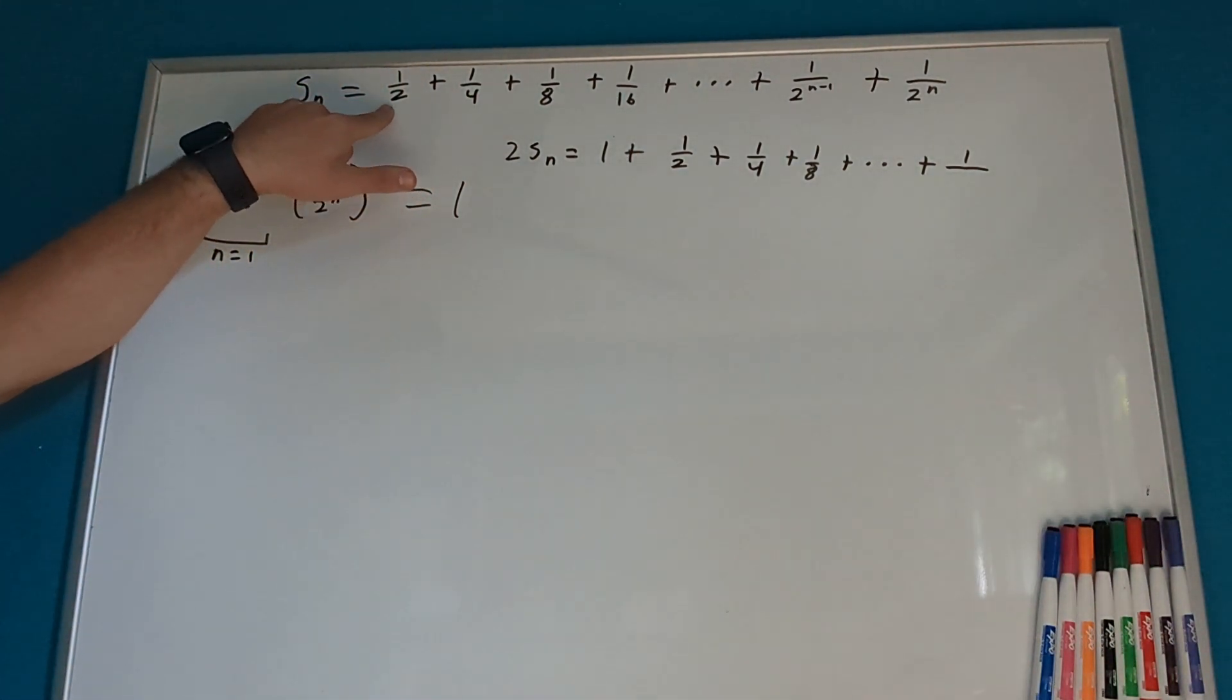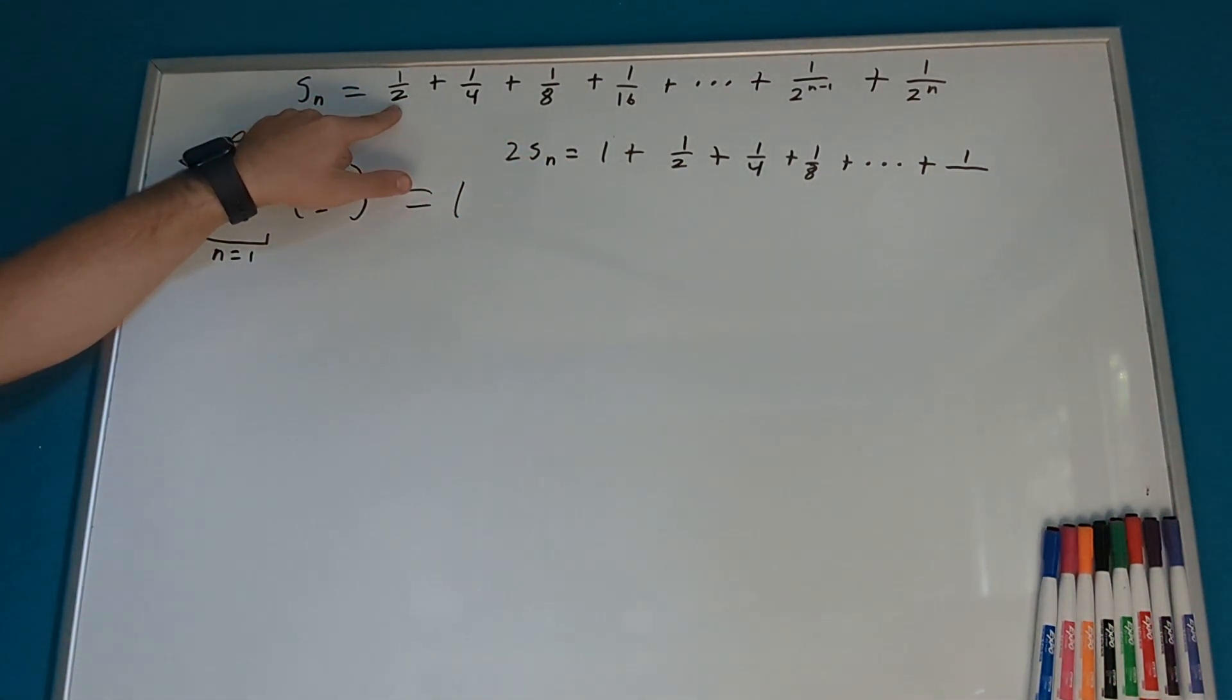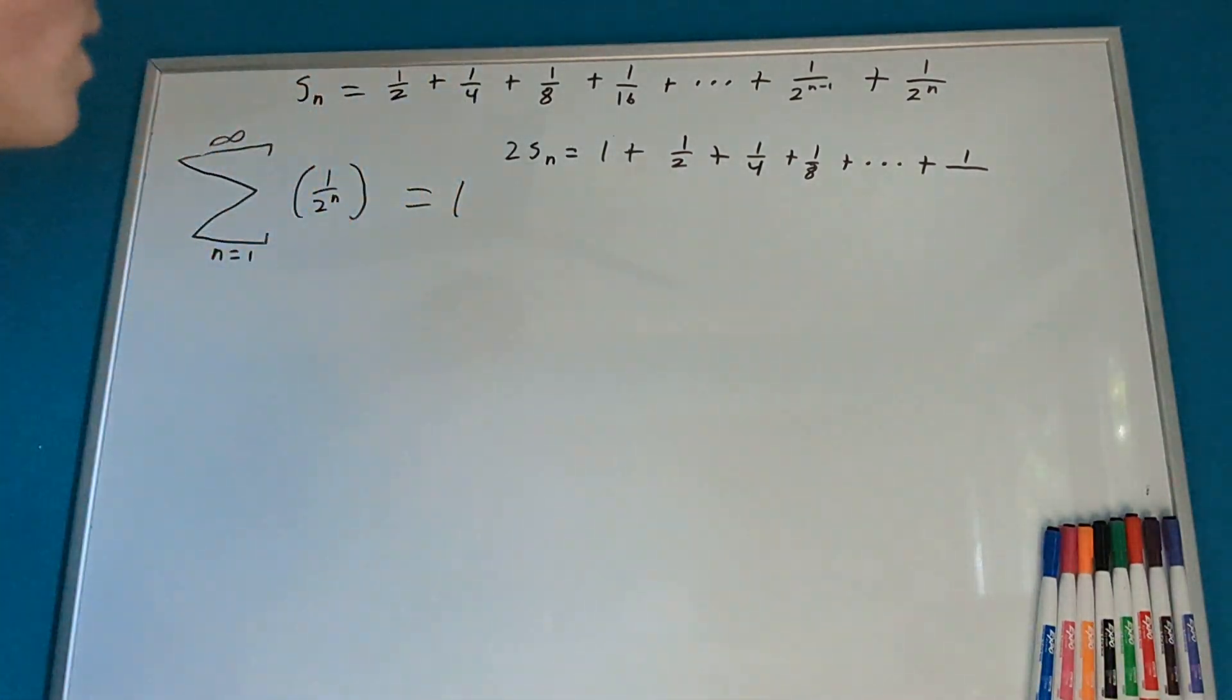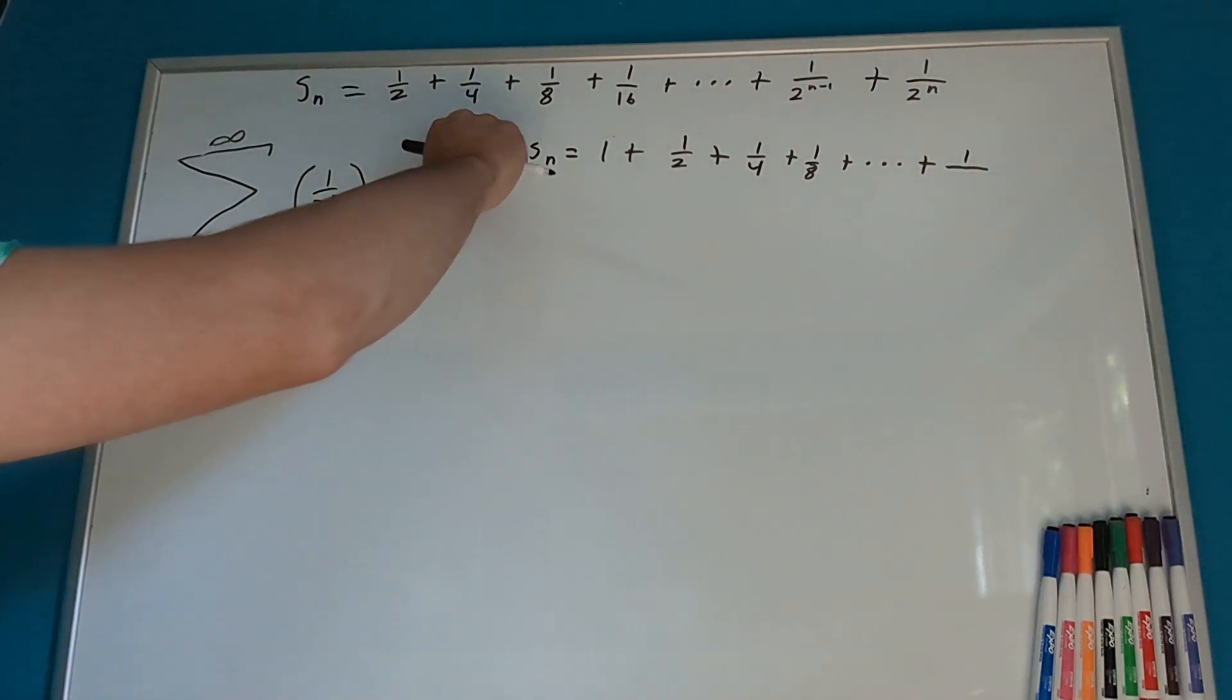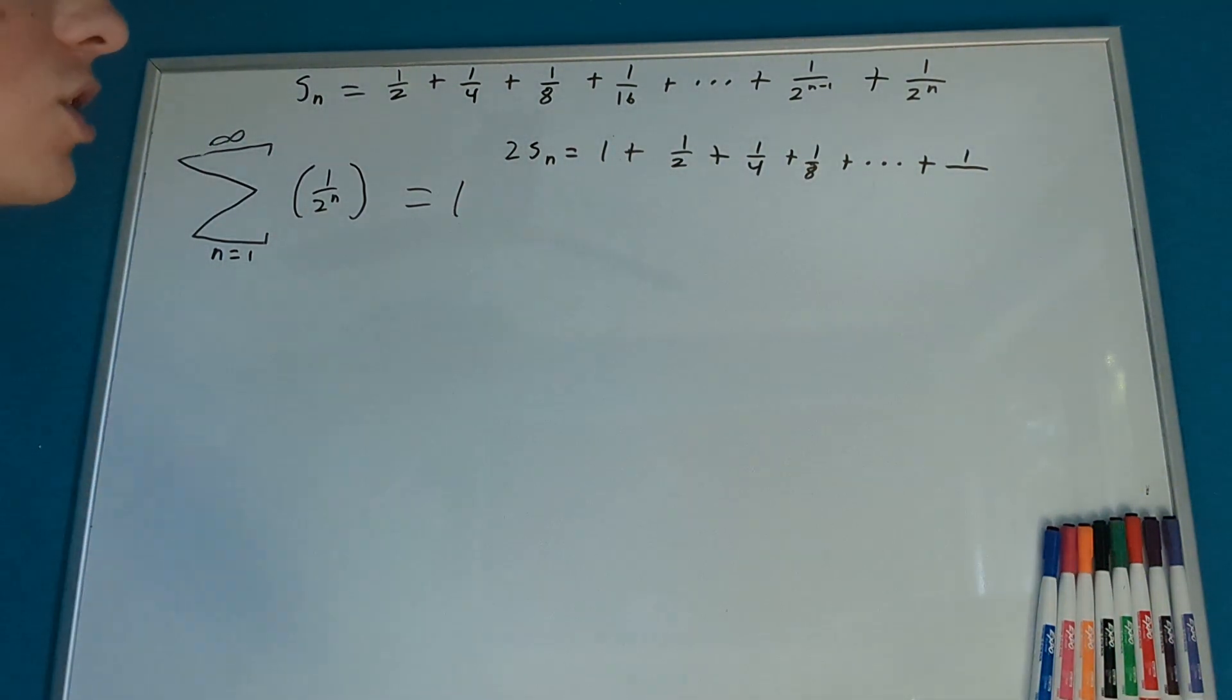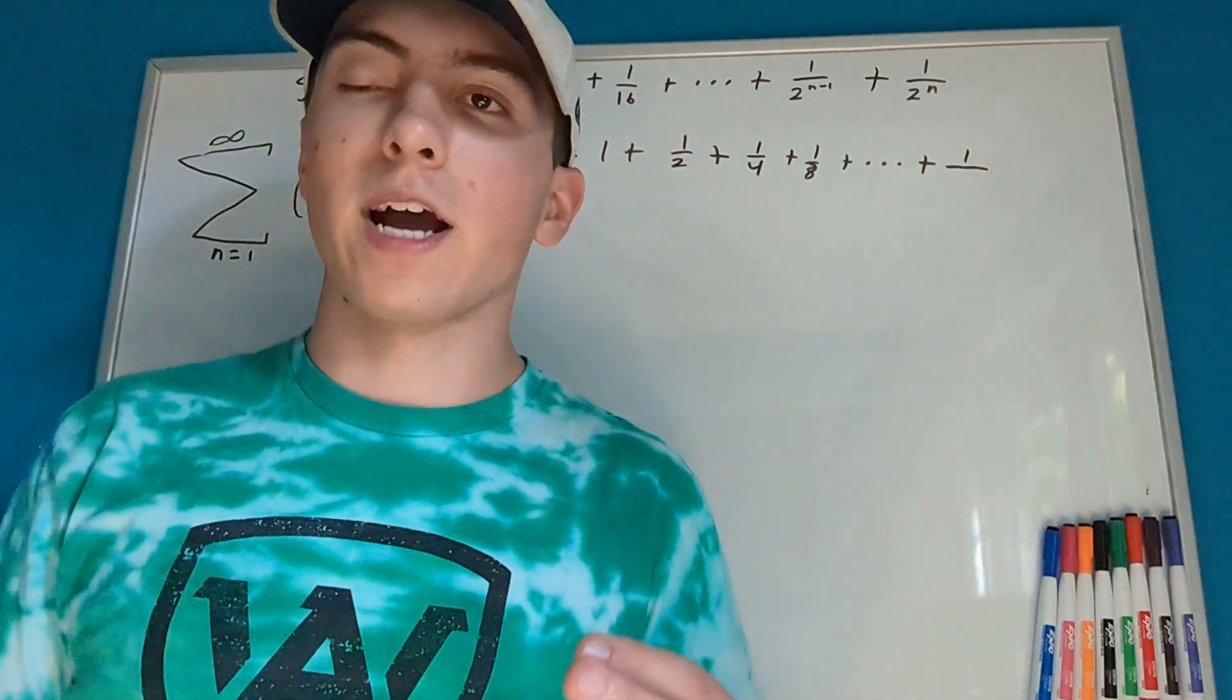Well, if we have 1 over 2 to the 1, like we would have had here, we get 1/2. But if we have 1 over 2 to the 0, we get 1 over 1, which is 1. Up here, if we have 1 over 2 to the 2, we get 1/4. But down here, if we have 1 over 2 to the 1, we get 1/2. So, we can see each time we are subtracting 1 from the exponent.